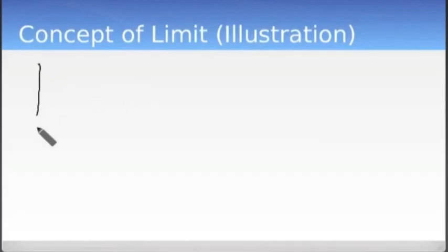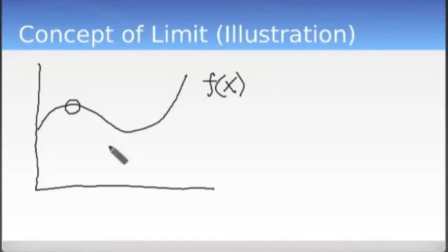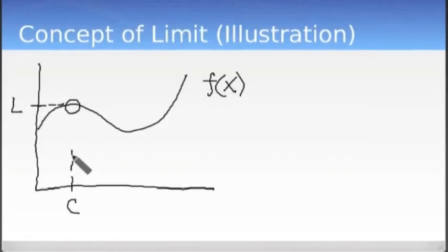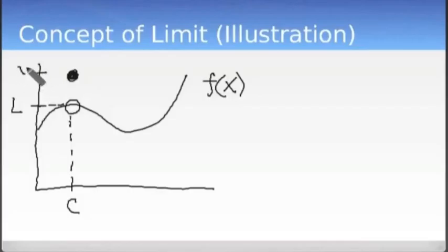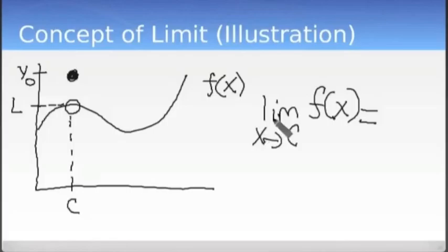Here is an example just to serve as an illustration. This function we'll label f of x. We'll label this point y-zero. Here we're going to show you the limit as x approaches c of f of x. As x approaches c from both the right and left sides, the function approaches this value.